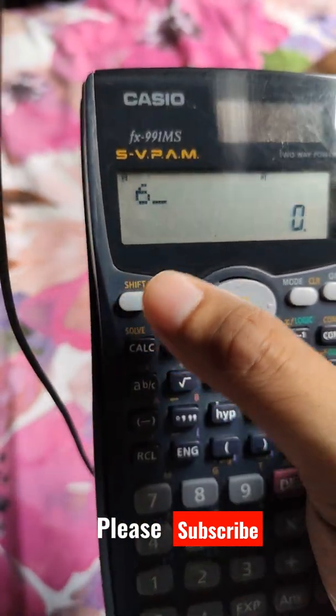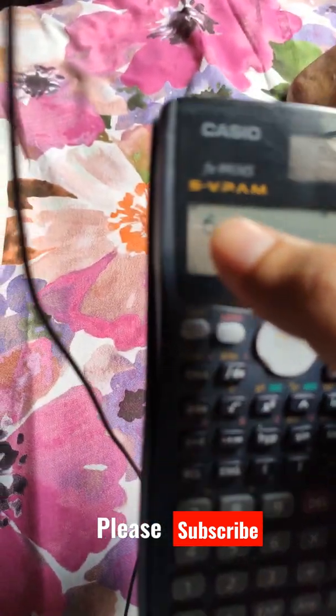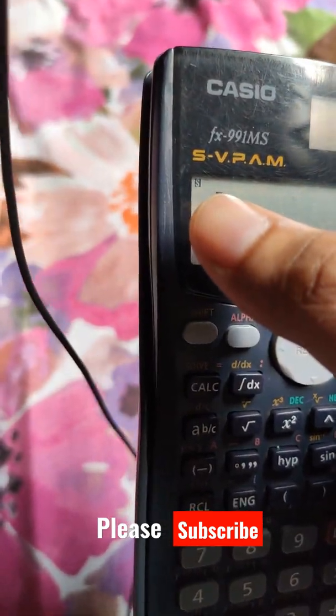How do we do it? We press the shift button. Now you see the S here. You see the S here that shows you that shift is activated.